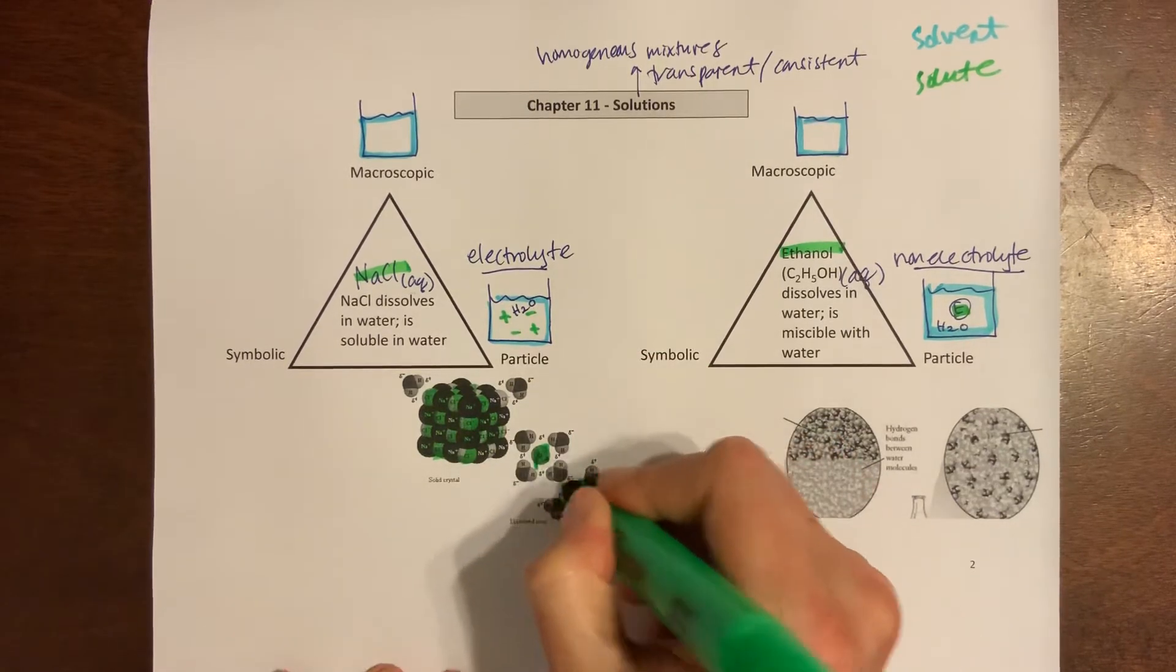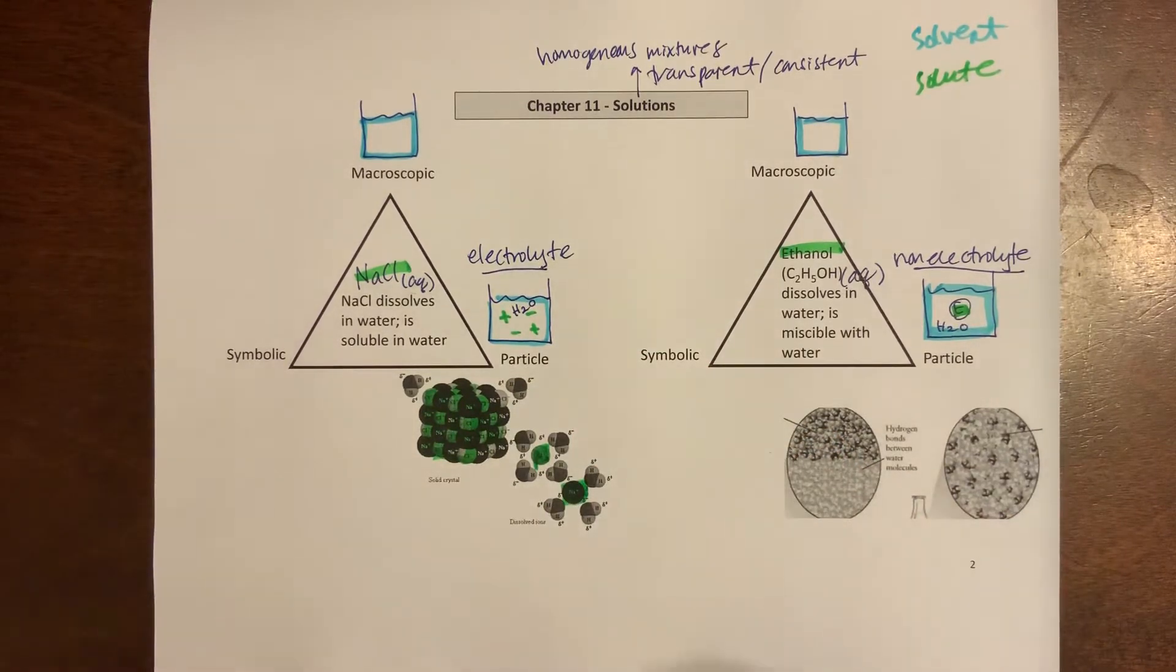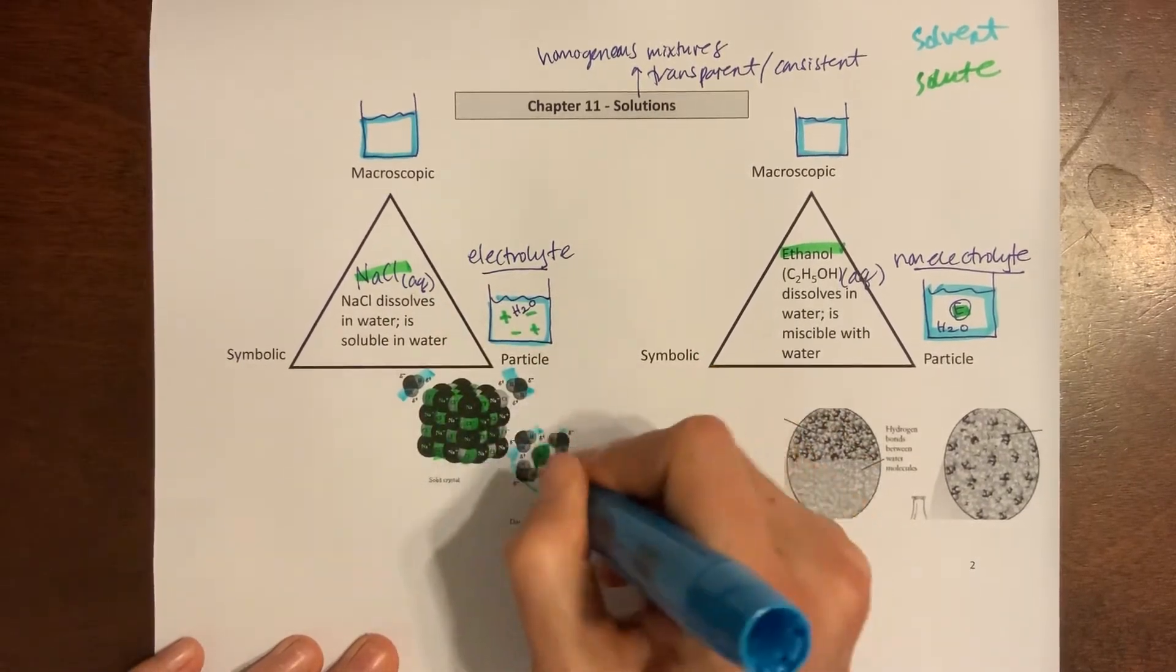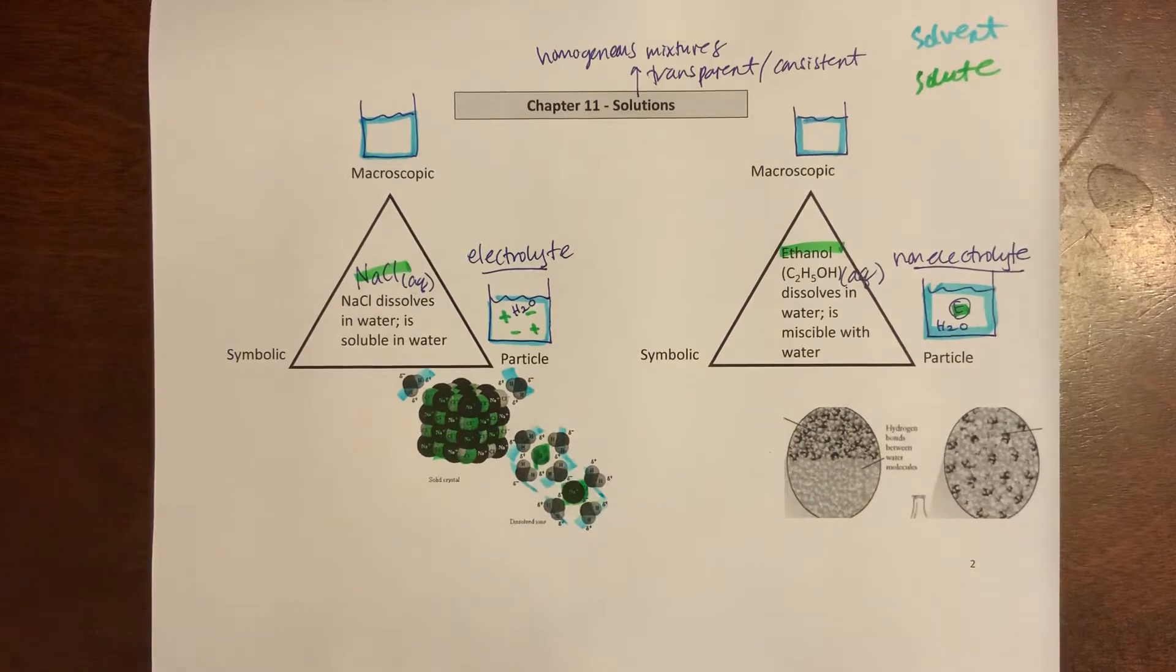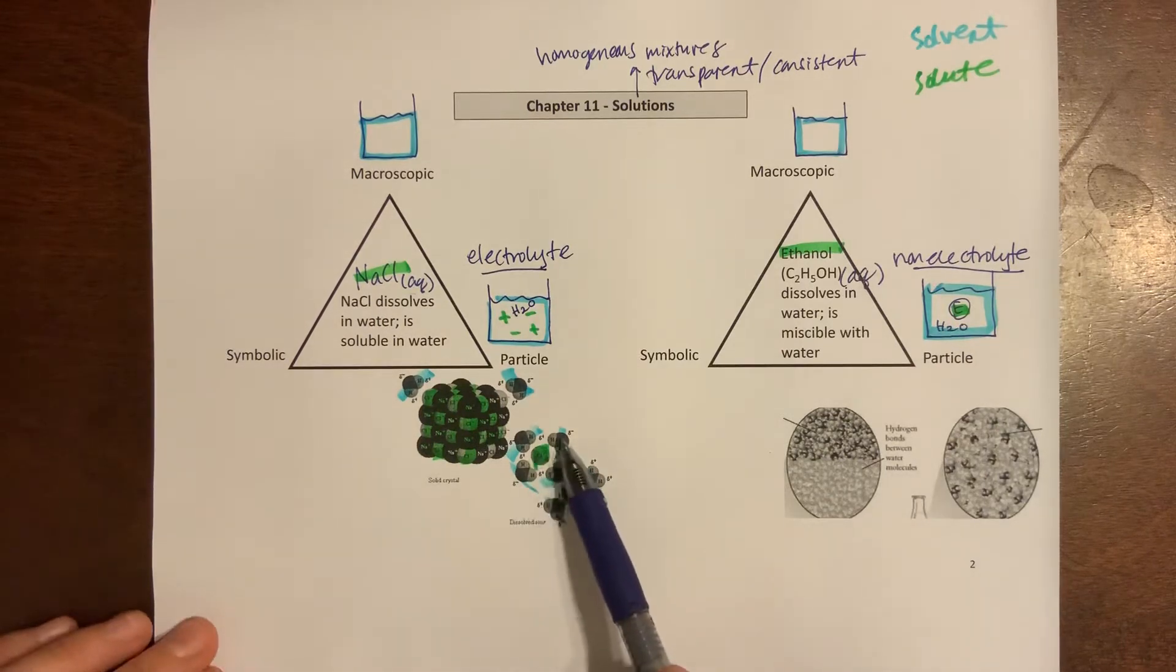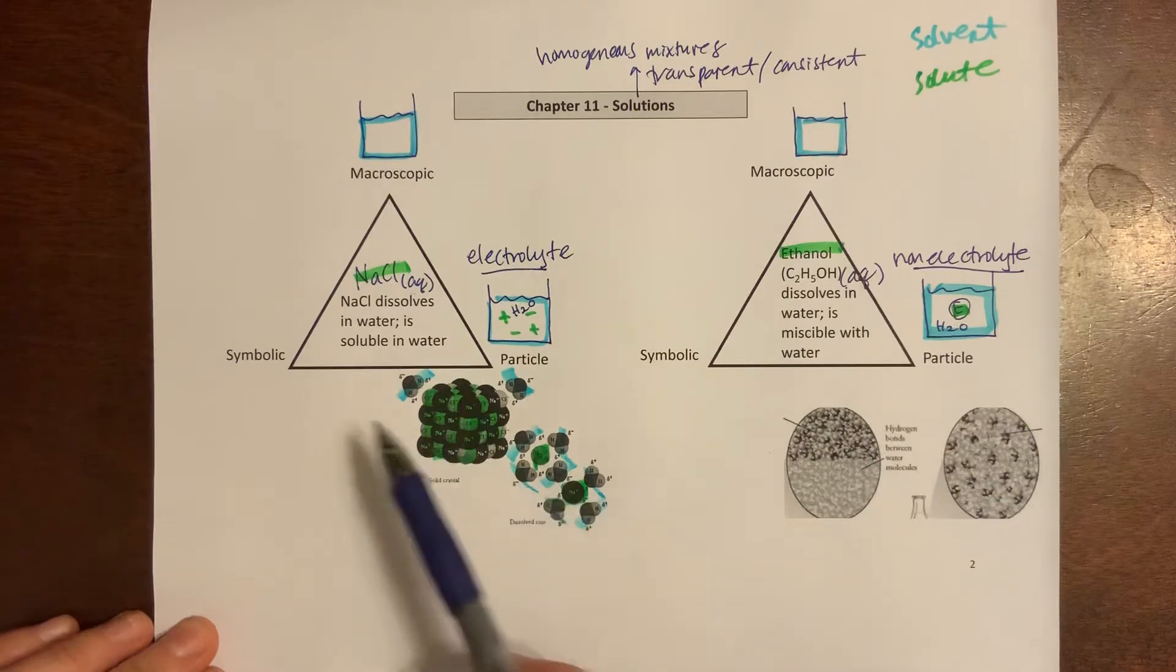Here's a chlorine that got pulled out and here's a sodium that got pulled out. Those get pulled out actually by the solvent molecules which are in blue here. So the solvent comes along and starts to pull those ions out and we'll see a little bit more of that in our symbolic notation.